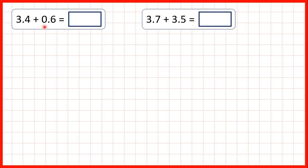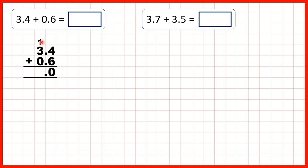We have 3.4 plus 0.6, so again we set this out as a column addition, making sure that our decimal points are lined up, and copy the decimal point down into our answer line. Working from right to left, we start by adding our tenths: 4 plus 6 is 10, so that's 1 and 0, and then 1 plus 3 plus 0 is 4. Our answer is 4.0, but 4.0 can just be written as 4, because the point 0 only tells us we don't have any tenths, and a whole number already shows that.